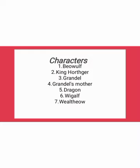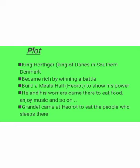There are seven characters used in this poem. First is Beowulf, the hero of the poem. King Hrothgar is the king of the Danes. Grendel is a monster who attacks the Danes. Grendel's mother is a monster who comes to take revenge for her son. The Dragon is a powerful serpent who becomes angry because one of the Danes stole a cup from his treasure. Higlac is the relative of King Hrothgar, and Welthow is the wife of King Hrothgar.